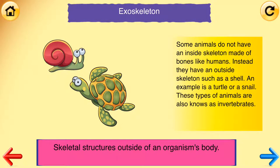Exoskeleton: skeletal structures outside of an organism's body. Some animals do not have an inside skeleton made of bones like humans. Instead, they have an outside skeleton such as a shell. An example is a turtle or a snail. These types of animals are also known as invertebrates.